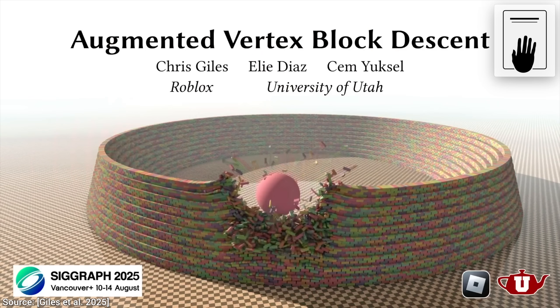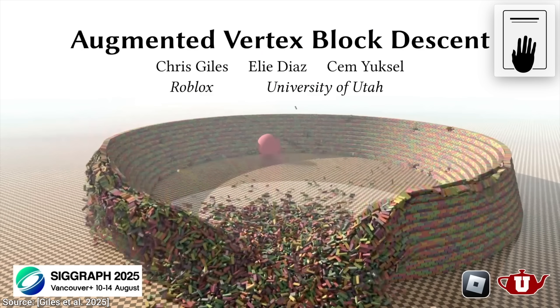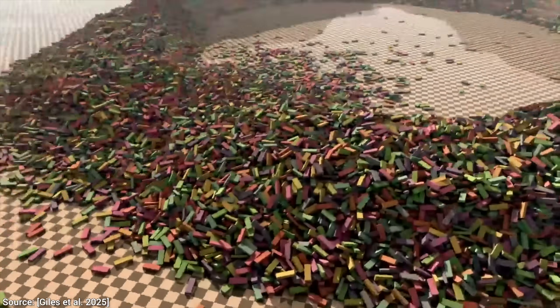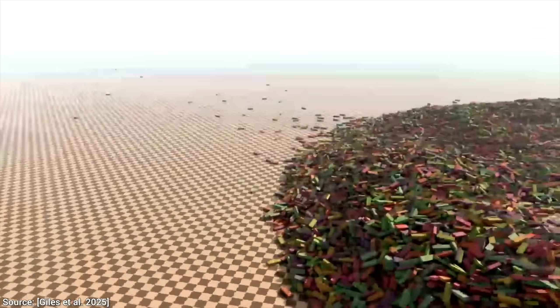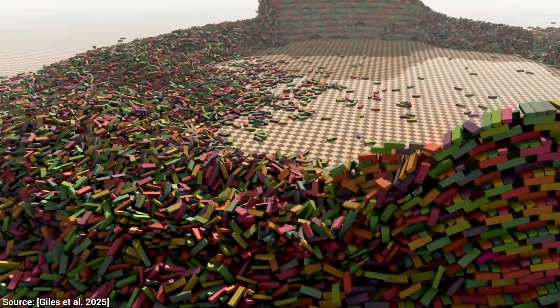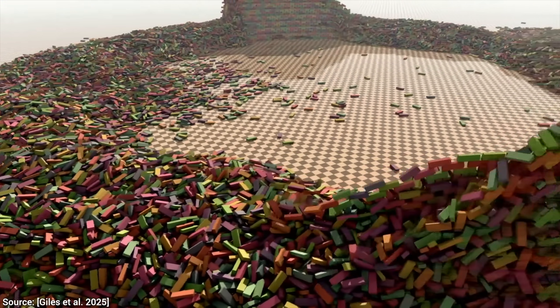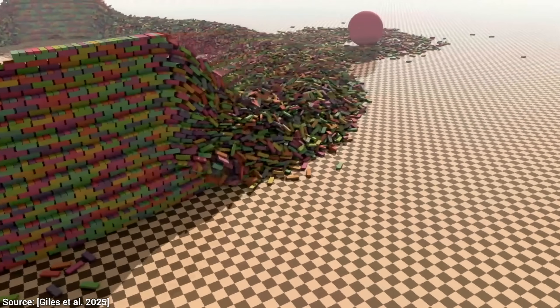Now, hold on to your papers, fellow scholars, and check this out! This collaboration between Roblox and the University of Utah can run this amazing scene easily faster than real time. Yup, at 100 frames per second on one consumer graphics card. Goodness!